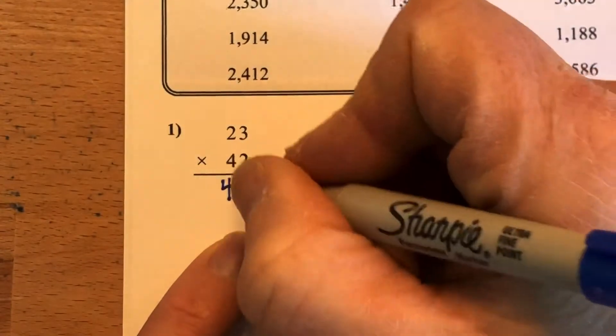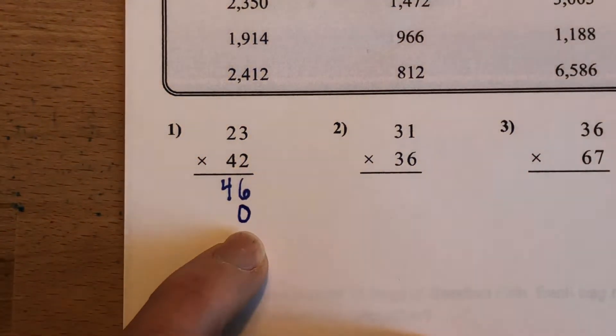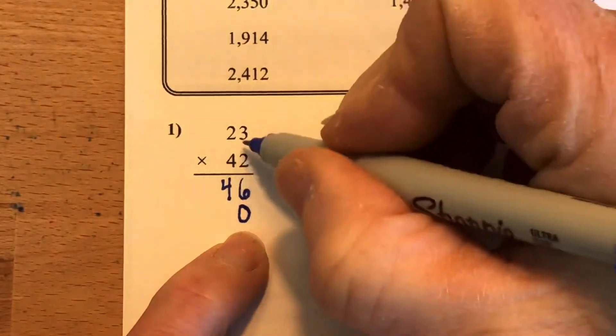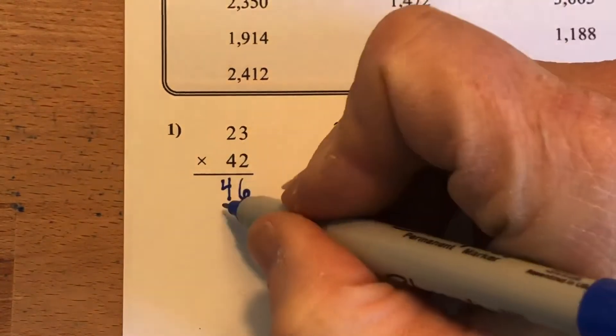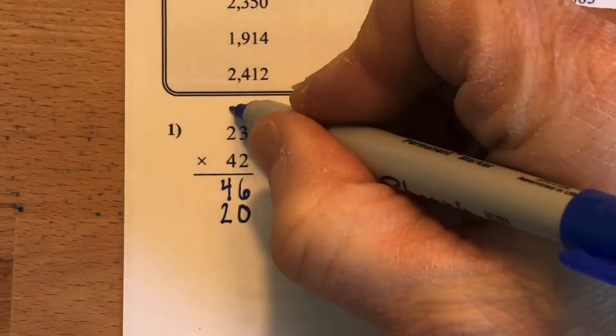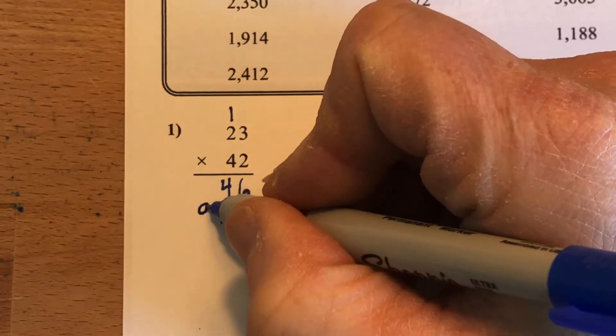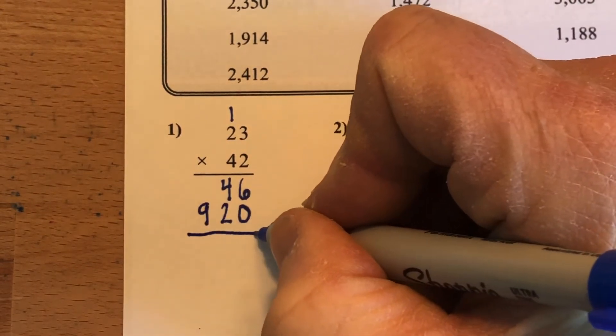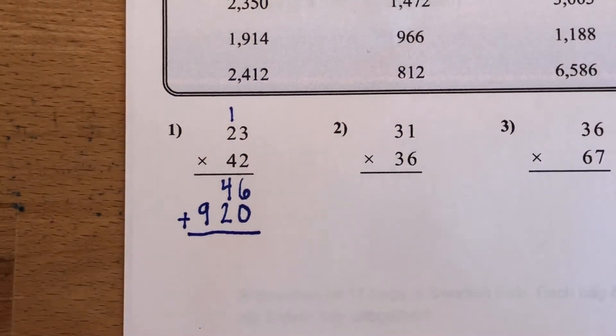Then I move over to my tens place, so I need to put down my 0 here to hold the place. Call that guy Bob. Now I can just multiply these the same exact way I multiplied this in the ones place. 4 times 3 is 12. Put down the 2, carry the 1. 4 times 2 is 8, plus 1 is 9. Notice that I'm putting my numbers in very neatly, and I'm writing small, not huge.